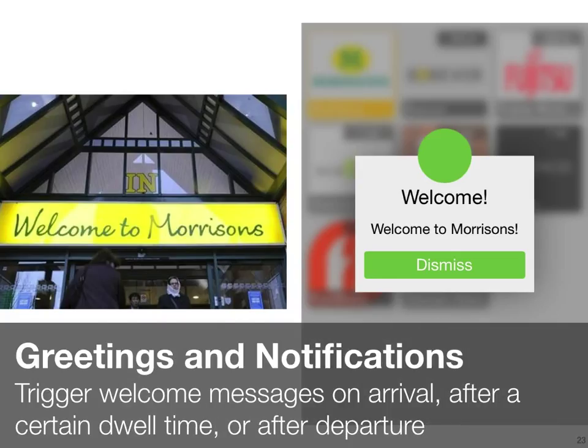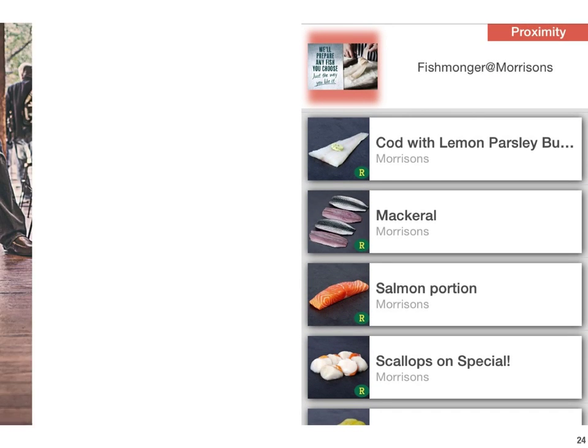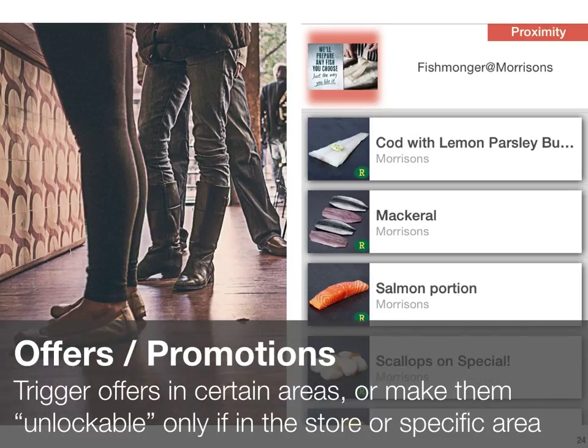The second proximity mechanic is around offers. It becomes possible to create offers and promotions that only unlock in a particular area — if you're in the store or even within a specific area of the store. You can have offers visible within an app that act as a footfall driver: they're visible in the app, but you can't unlock them and get the value unless you come into the store or a particular area of it.